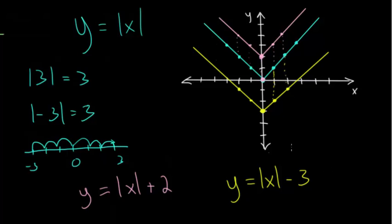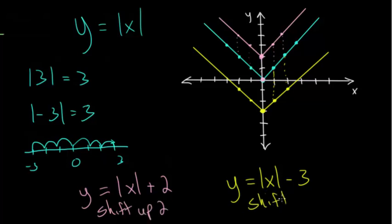So to shift up and down, we just add or subtract on the outside — the blue one shifted up two, and the yellow one shifted down three. But to shift left or right, it's a little more complicated. Let me make a bit more room and draw another coordinate plane with our parent function.